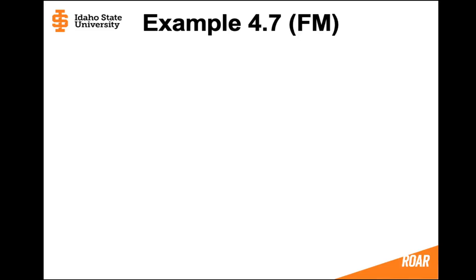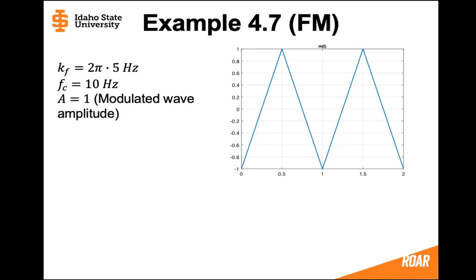Let's look at an example where we consider frequency modulation. We start with a triangle wave that goes from minus 1 to 1 and has a period of 1. We have a constant kf equal to 2 pi times 5, a carrier frequency of 10 hertz, and the modulated wave amplitude is equal to 1.